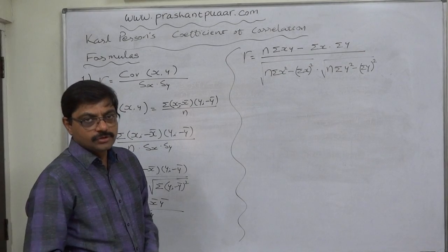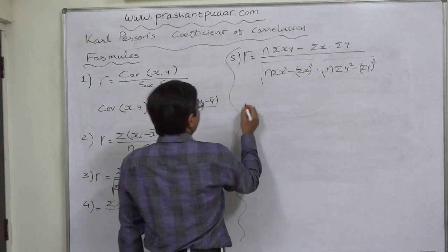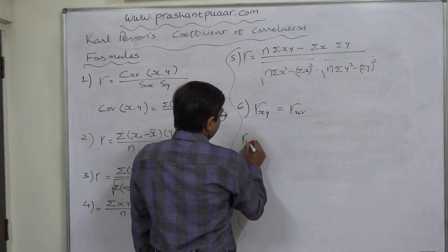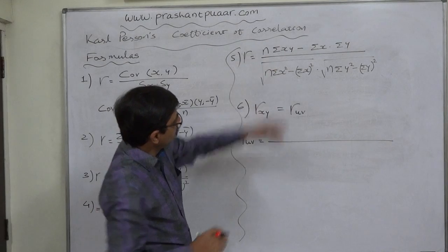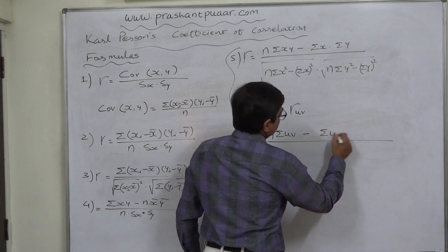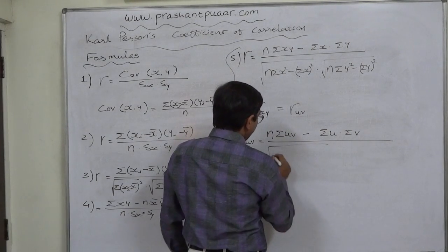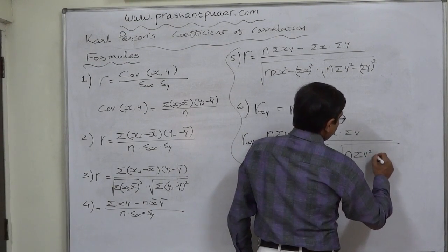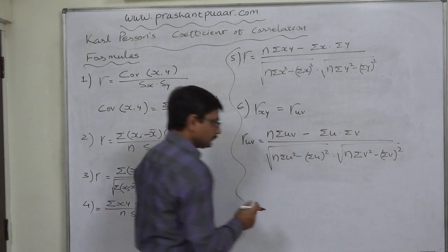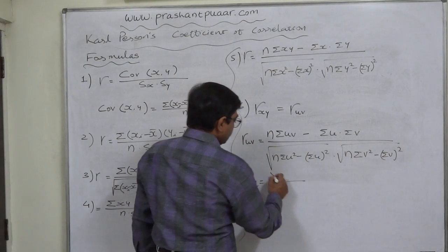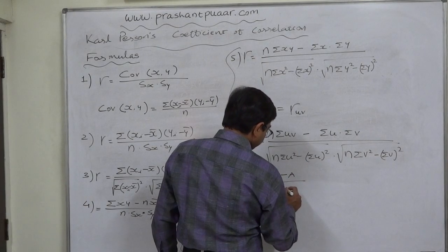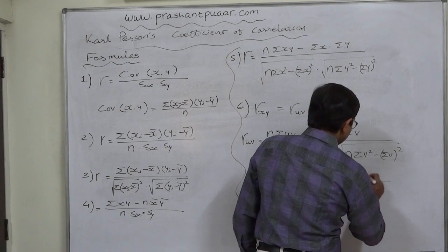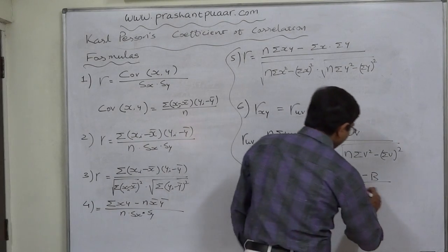So the formula to calculate r between x and y is equivalent to r between u and v. We calculate r(u,v) using: n sigma uv minus sigma u times sigma v, divided by the square root of (n sigma u-squared minus (sigma u) squared) into the square root of (n sigma v-squared minus (sigma v) squared). Here, u is simply the change of origin and/or scale of x, and v is the change of origin and/or scale of y.